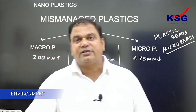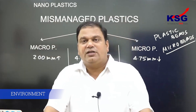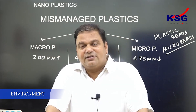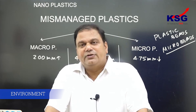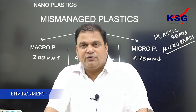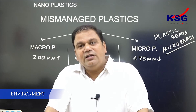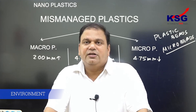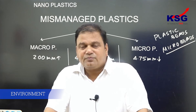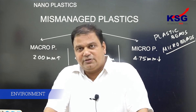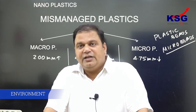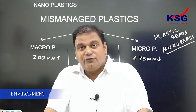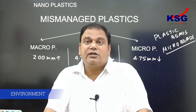Both microplastic and nanoplastic are of concern, but nanoplastic is more of a concern in recent times. The irony is that studies over the last decade were concentrated only on plastic in the aquatic ecosystem, but it has recently been found that plastic waste is more present in the terrestrial ecosystem. So we should focus our study on the terrestrial ecosystem.